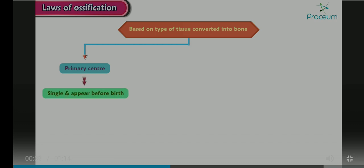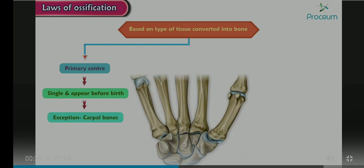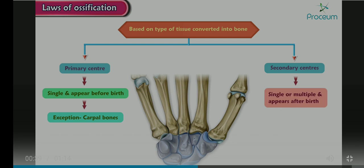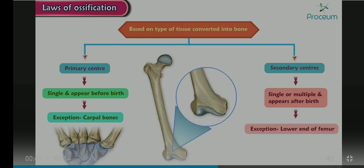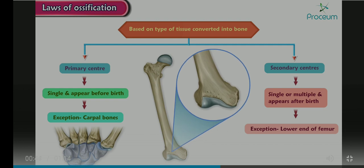An exception to this is the carpal bones. Secondary centers of ossification can be single or multiple and appear after birth. An exception is the lower end of the femur.